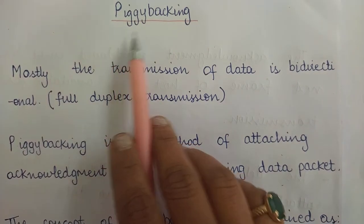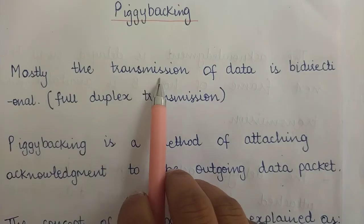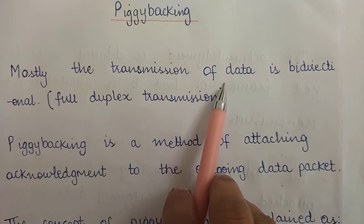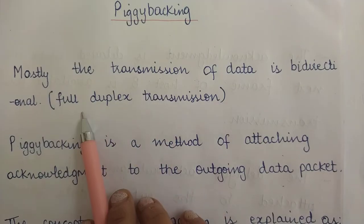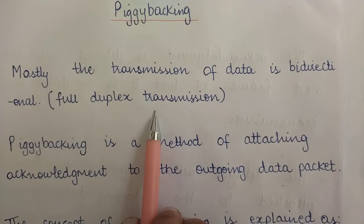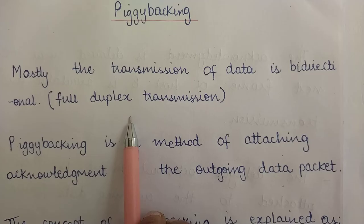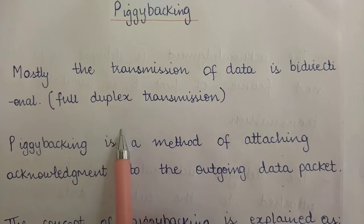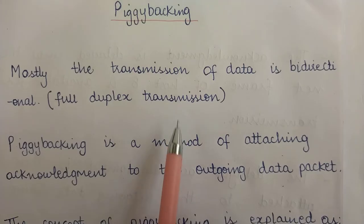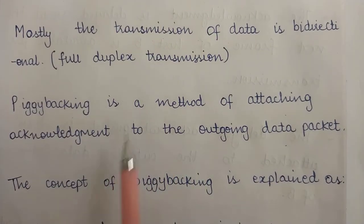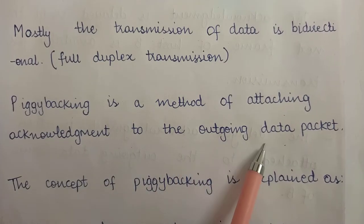Today we are going to study piggybacking in networking. We know that mostly the transmission in networking is bi-directional, or in other words, full duplex transmission. By full duplex transmission we mean that one host can both send and receive data. Both hosts are capable of sending and receiving data. Piggybacking is a method of attaching the acknowledgement to the outgoing data packets.